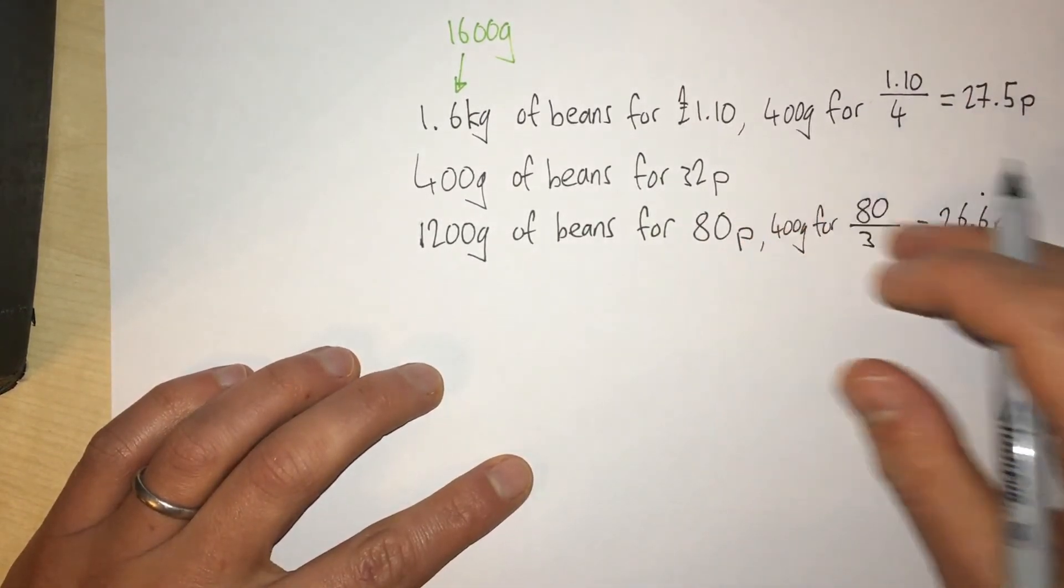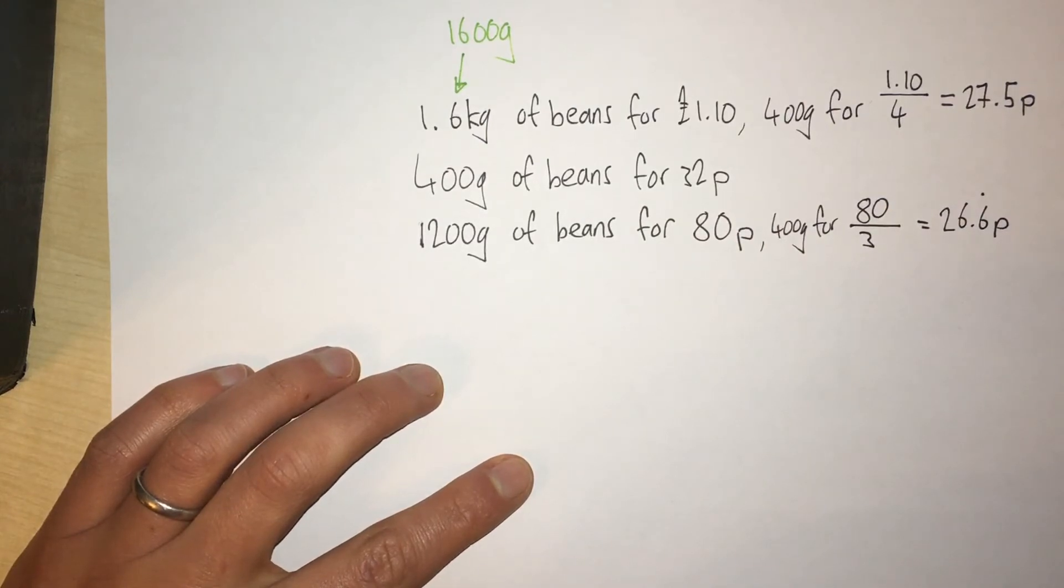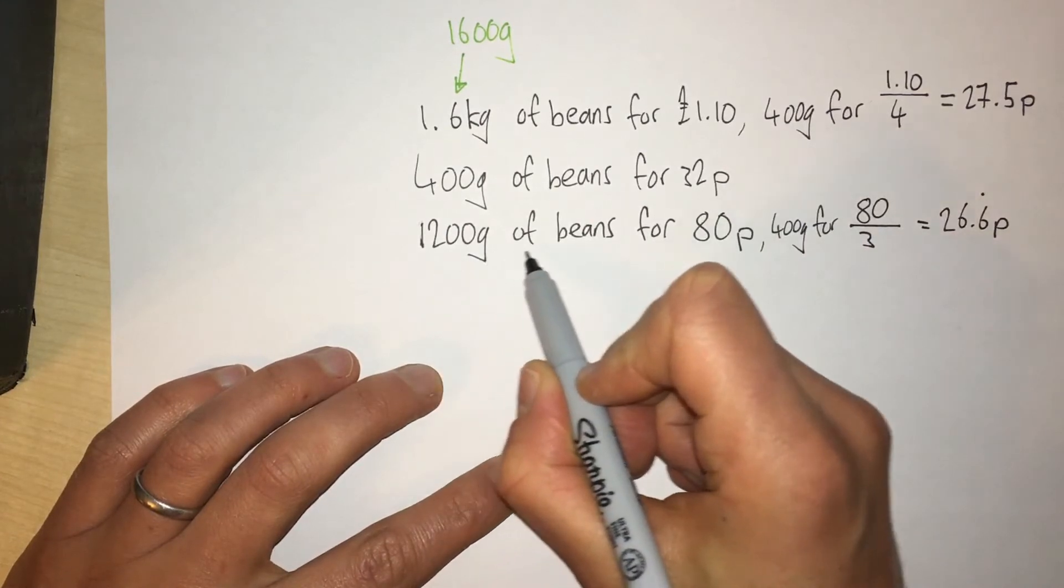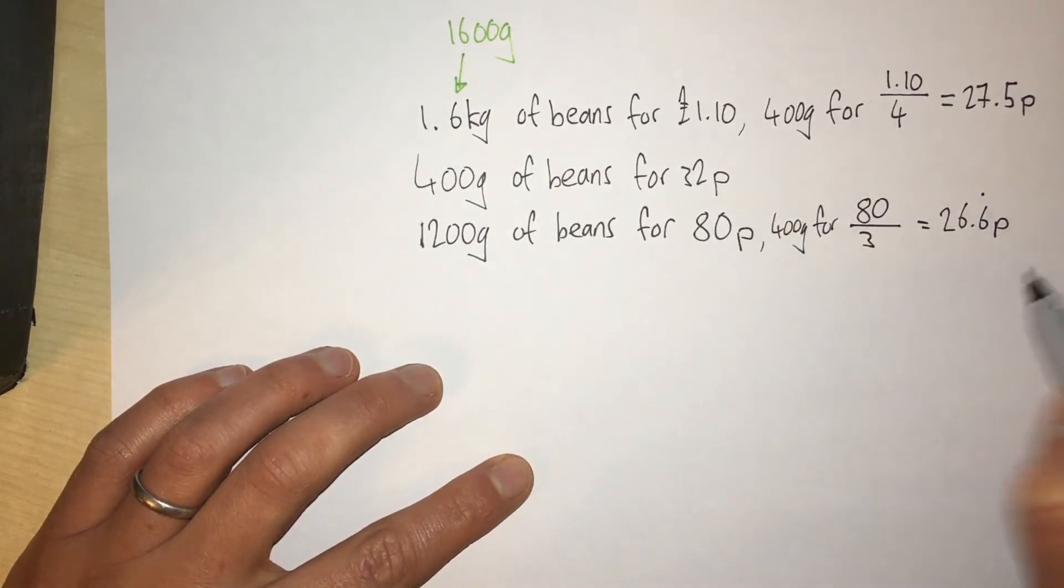Well, we can see here that I've got the same answers that I did in the first problem. I used a calculator to work these out, and actually 1200 grams of beans for 80p was the best value for money.